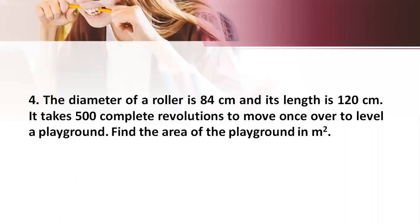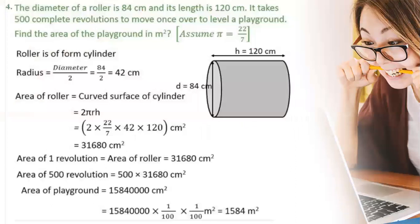Now coming to the fourth problem. The diameter of the roller is 84 cm and its length is 120 cm. It takes 500 complete revolutions to move once over a level playground. We need to find the area of the playground in meter square. So the roller is in the shape of a cylinder. Radius = diameter/2 = 84/2 = 42 cm. Now the area of the roller is equal to the curved surface area of the cylinder, which is 2πrh. By substituting the values of π, r, and h we get 31680 cm².